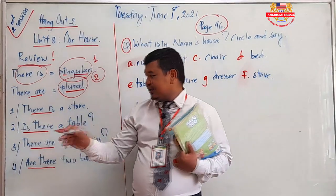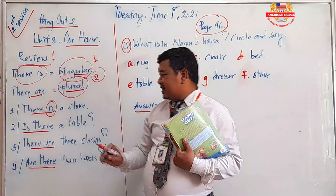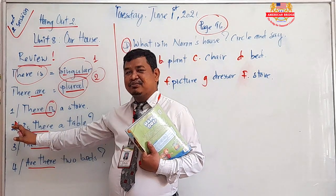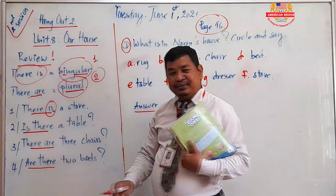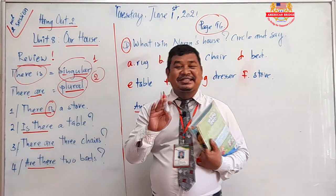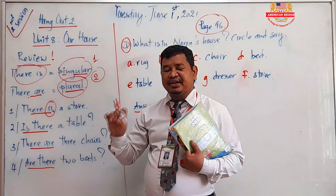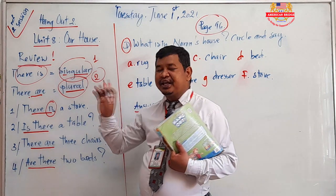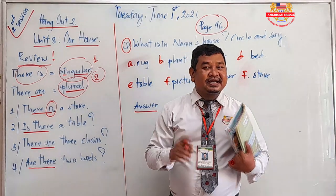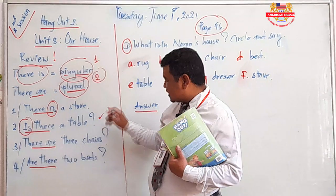For example, 'There is a stove' — we have only one stove. If you want to make a question, just put 'is' at the beginning of the sentence for a singular question: 'Is there a table in your classroom?' The answer would be 'Yes, there is a table in my classroom' or 'No, there isn't a table in my classroom.'